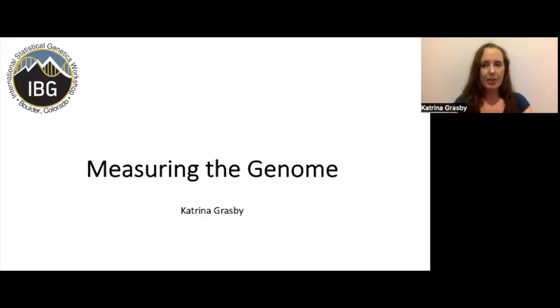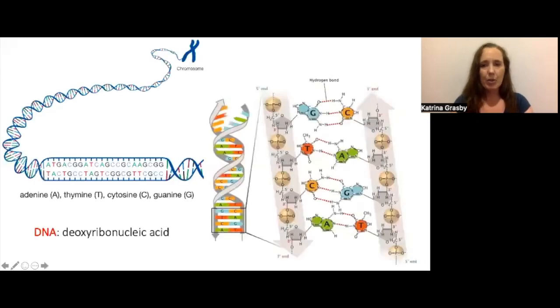In this talk I'll be covering the basics of inherited genetic variation and how it is measured. When we talk about measuring the genome, we're really focusing in on DNA. The DNA molecule is made up of two strands which wind around one another to form that classic double helix.